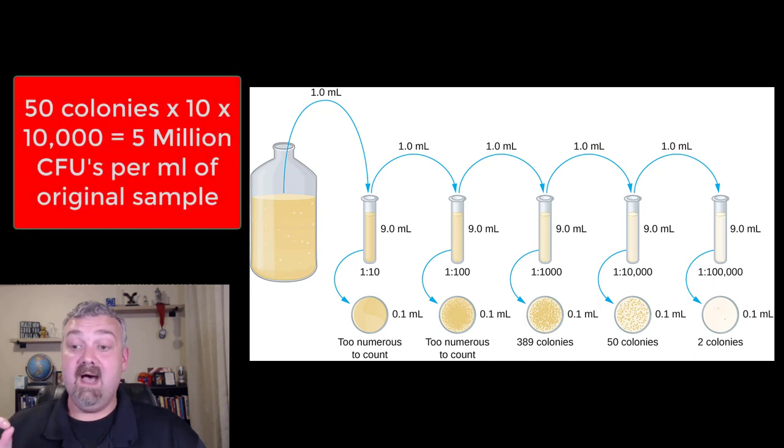So you do the math. So notice that when you made the plates or whether it was a pour or spread plate, you only added 0.1 milliliter of that original milliliter that you added in. So to do the math, you would not take 50 times 10,000. You would take 50 times 10 to get back to how many colonies came from a milliliter of the original sample and then take that times 10,000.